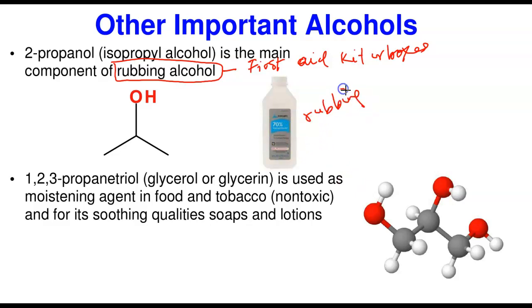Another important alcohol is glycerol, also called glycerin. Its IUPAC name is 1,2,3-propanetriol. It is used as a moistening agent in food and in tobacco, and is commonly used to make flavored e-cigarettes. It is relatively non-toxic and is also used in making soaps and lotions for skin care.